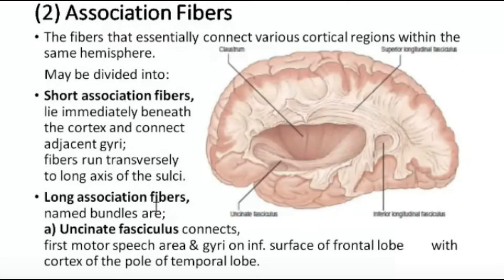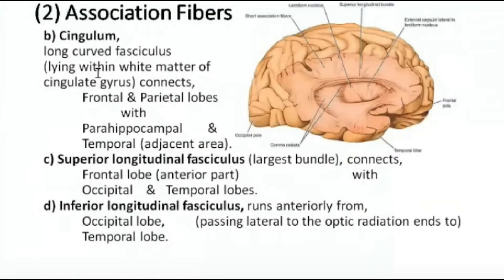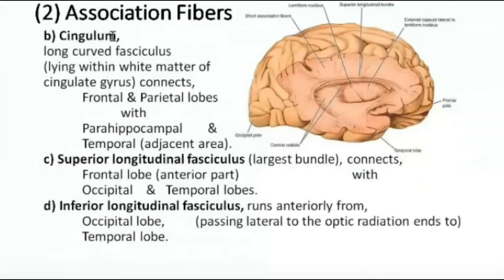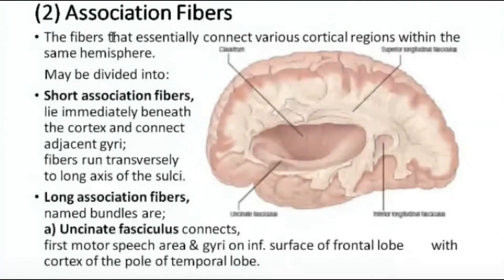The named long association fiber bundles are: the uncinate fasciculus, cingulum, superior longitudinal fasciculus, inferior longitudinal fasciculus, and the frontal occipital fasciculus. These are the five main named long association fibers.